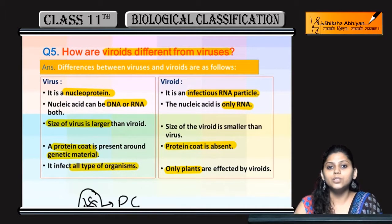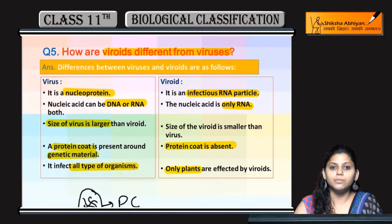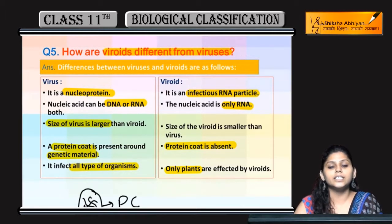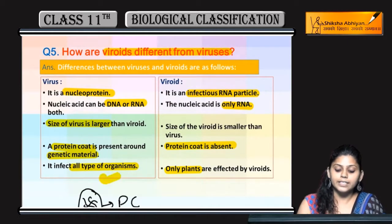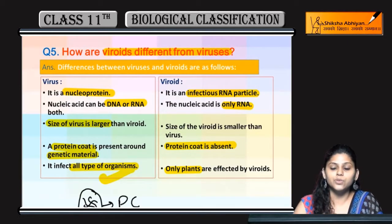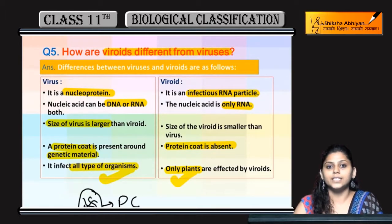To summarize: viruses contain nucleoproteins, whereas viroids contain only nucleic acid, and that nucleic acid in viroids is only RNA. In viruses, both DNA and RNA can be present. Viruses have a protein coat surrounding the genetic material, while viroids have no protein coat. Viruses infect all types of organisms, while viroids infect only plants.